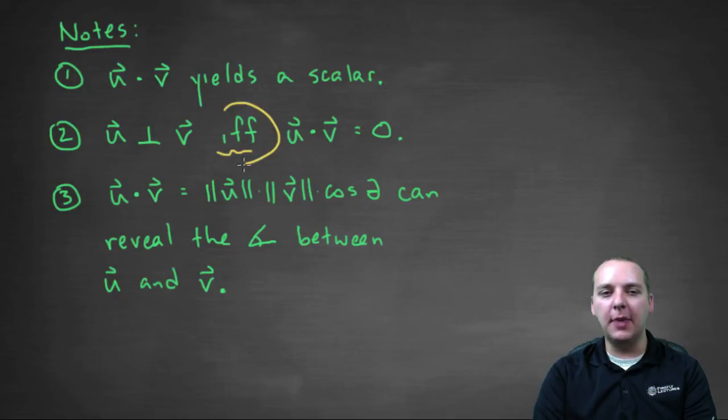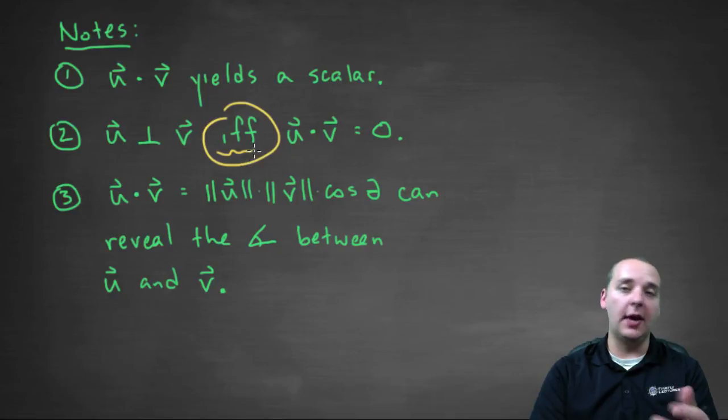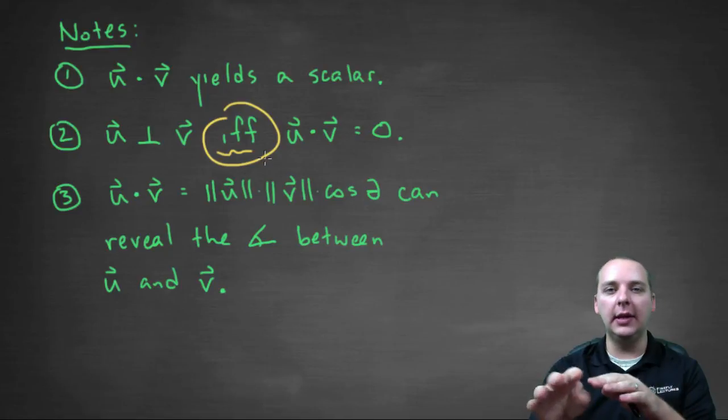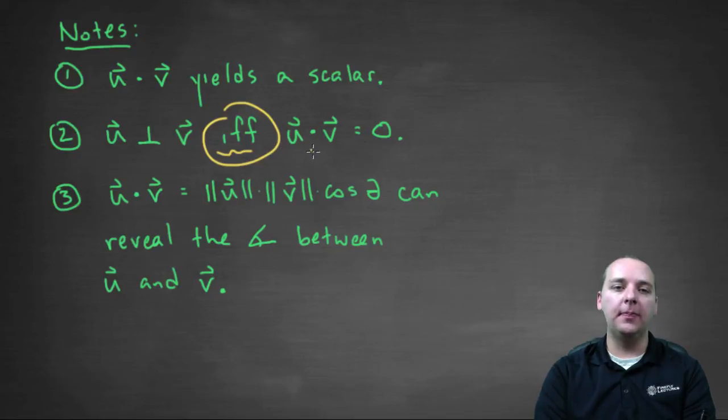If and only if, the dot product is zero. I don't know if you've seen this math notation before, but if you haven't, you just learned something new. And whenever you write IFF, that's a math phrase that means if and only if. So these guys are perpendicular if and only if the dot product is zero. So if you wanted to know if two vectors were orthogonal, you would take the dot product and just see if you get zero.